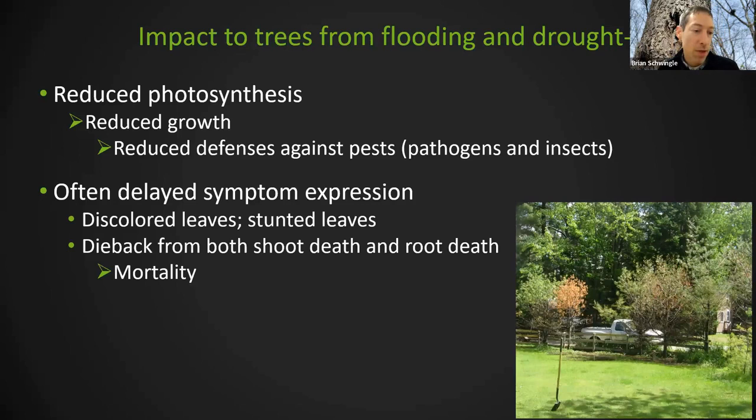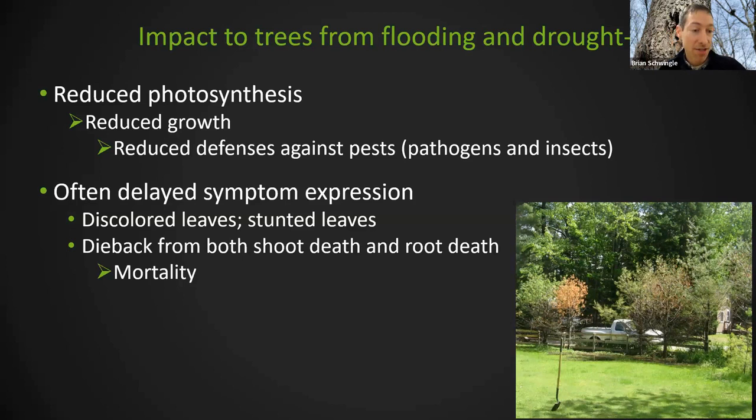What are the symptoms from flooding and drought? Minor symptoms include discolored leaves and premature leaf shedding. More severe symptoms include stunted leaves, then shoot dieback — death from the outer crown — and root death, which you can never see. There's a positive feedback loop: if you get root death, you get more shoot dieback, and eventually you can get death of the whole tree.